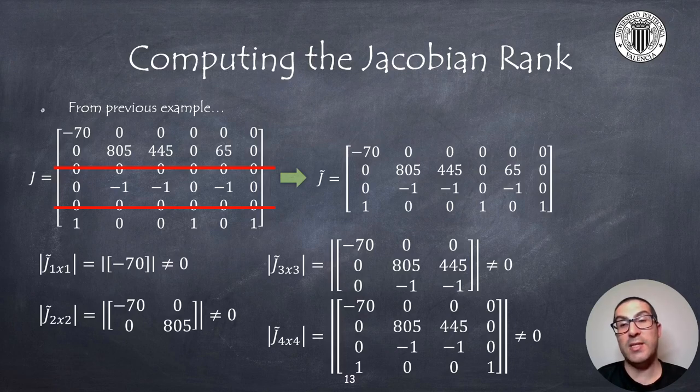In the end we realize that the rank for this Jacobian matrix is actually 4. And also please bear in mind that there are many sub matrices for a given size and we just simply need to find one with a non-zero determinant before we try a larger matrix.